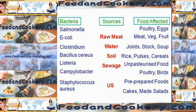Salmonella you tend to find in poultry and eggs, although if eggs have a lion's stamp on them these days, it's unlikely there is any Salmonella infection. On poultry, you're most likely to find Campylobacter and Salmonella. Campylobacter is the major cause of diarrhoea in the UK today.